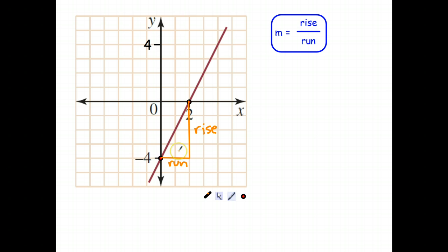All we have to do is count the number of squares. So the rise in this case is 1, 2, 3, 4. So m equals 4. And the run is 2. So it turns out that the gradient of this line here is 2.